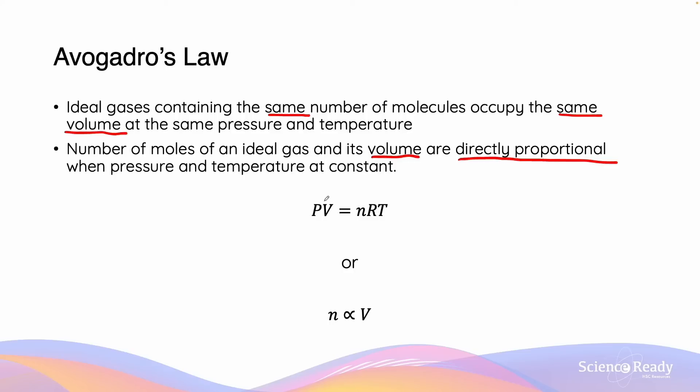So the way that we can quantify this relationship is by looking at the variables of the ideal gas law which is PV equals to nRT. The ideal gas law can be rearranged by dividing both the left and the right hand side by P to give us the formula V equals to nRT divided by P. Avogadro's law requires pressure and temperature to be constant in order for the relationship between volume and the number of moles of gas to be directly proportional.